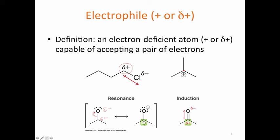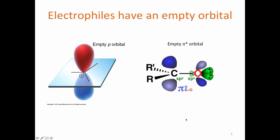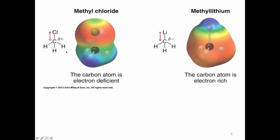So the carbon of any carbonyl — be it aldehyde, ketone, ester, amide, etc. — that carbon will be electrophilic. From an orbital perspective, electrophiles have an empty orbital. In the carbocation, the empty orbital is an empty p-orbital capable of accepting electrons. Remember that orbitals can have a maximum of two electrons each. On the carbonyl, we're looking at the pi-star orbital — the pi-star orbital is empty, so it's the orbital capable of accepting electrons. We can see how a methyl group can be either electrophilic or nucleophilic depending on what it's bound to. In the case of the carbon bound to chlorine, the chlorine pulls electron density away, making this carbon electron-deficient and therefore electrophilic.